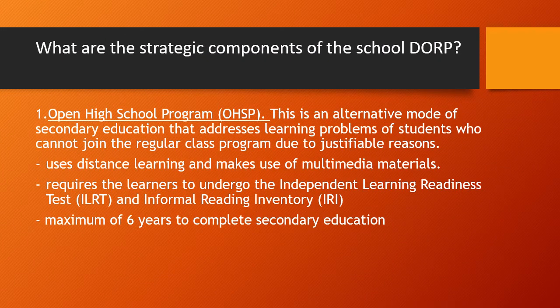What are the strategic components of the DORP? Number one is OHSP, the Open High School Program. This is an alternative mode of secondary education that addresses learning problems of students who cannot join the regular class program due to justifiable reasons. It uses distance learning and multimedia materials. It requires learners to undergo the Independent Learning Readiness Test or ILRT and Informal Reading Inventory or IRI, with a maximum of six years to complete secondary education.